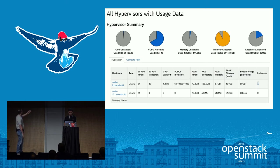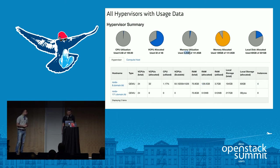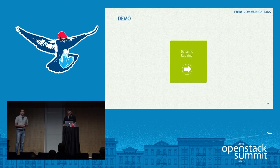The same has been reflected in the hypervisor summary — RAM utilization is only 3.7 GB out of 70 GB, and we are now having four instances running. This is the way we achieve more VM density using the utilization filter. This concludes our first demo, which talks about VM density.